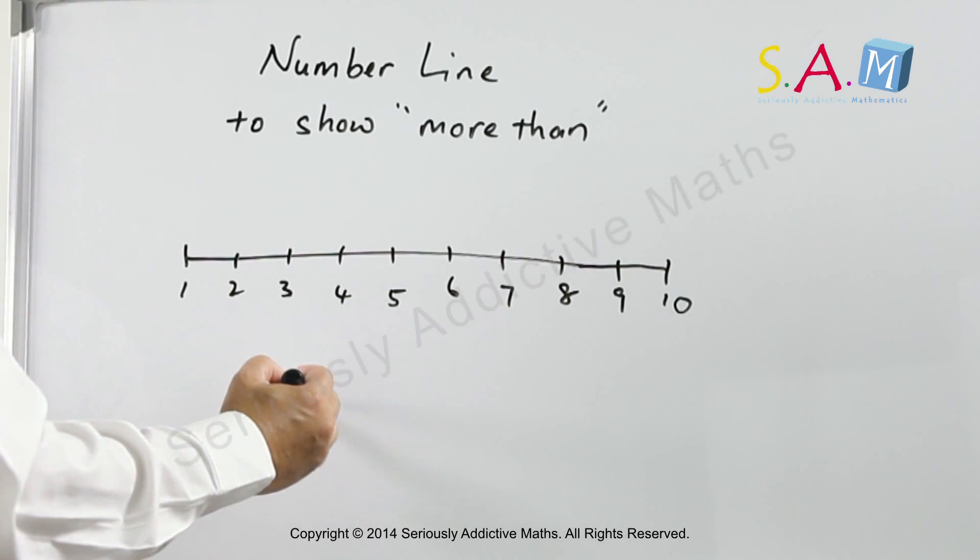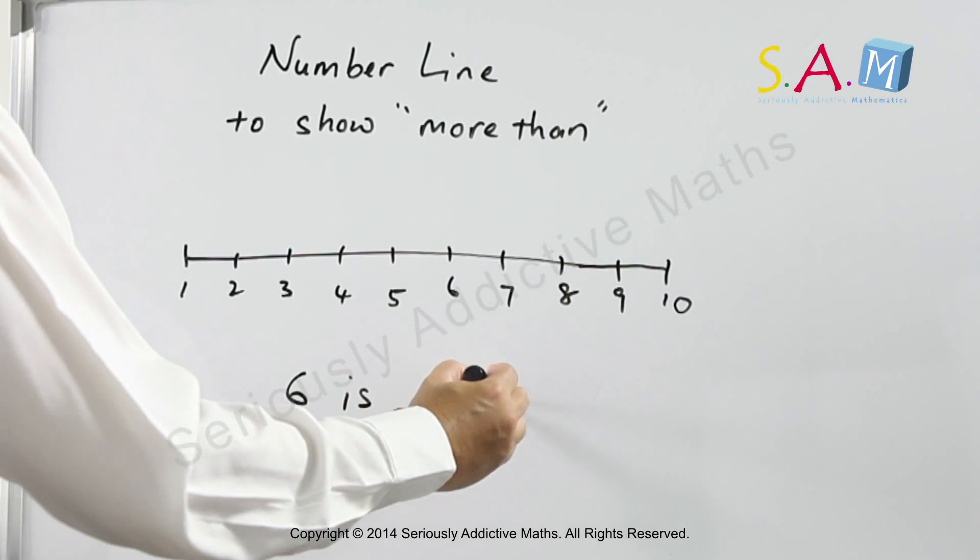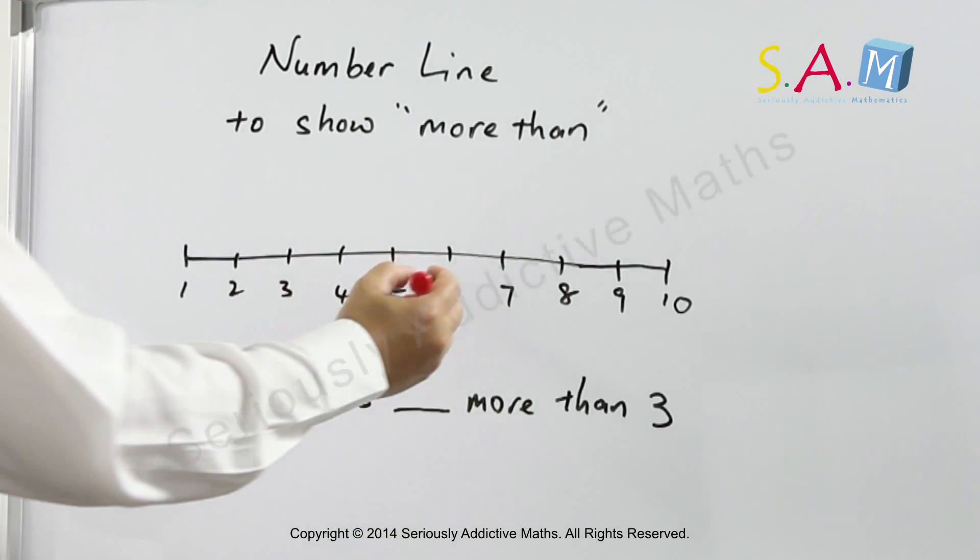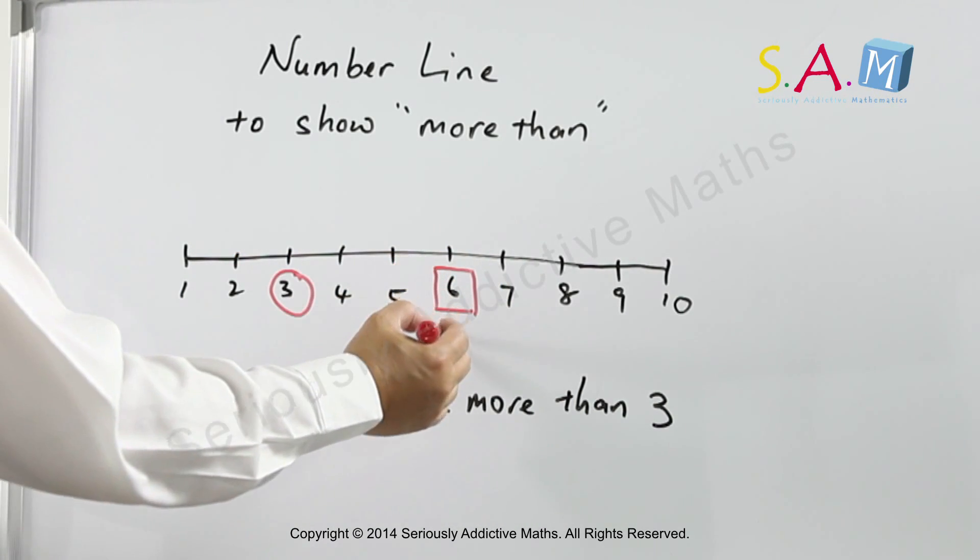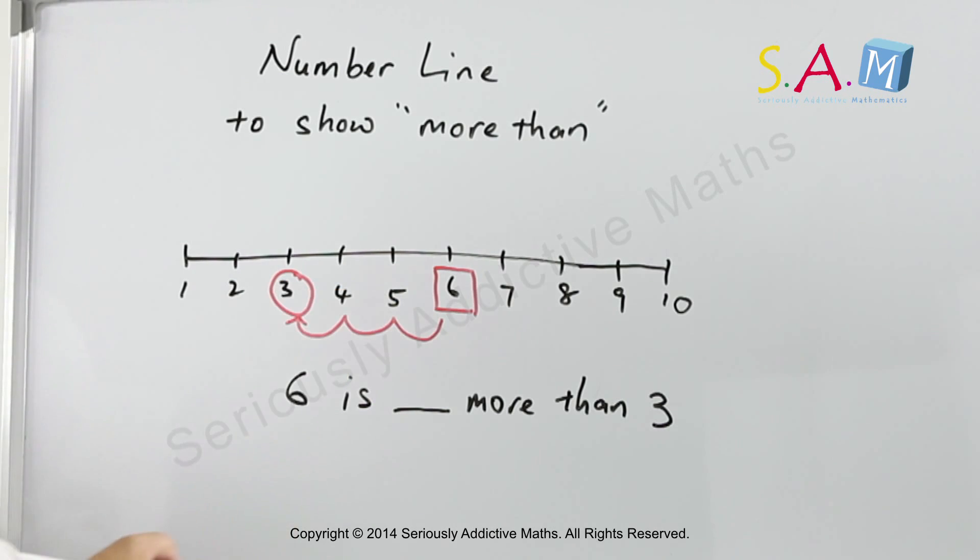For example, 6 is how many more than 3? We have 6 here and we have 3 here. So 6 is 1, 2, 3 more than 3. Another example,